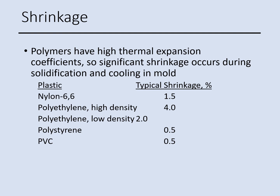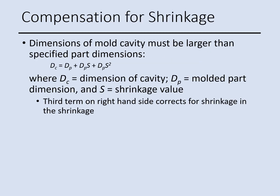Polymers, like other materials, have an expansion coefficient that affects the process during cooling because we have shrinkage, and this shrinkage must be taken into consideration. Looking at a list of materials: nylon has a typical shrinkage of 1.5%, polyethylene has more shrinkage at about 4%, while PVC has lower shrinkage at about 0.5%. Since we have shrinkage in polymers, we calculate the total amount and use it to design the mold cavity. The equation uses DC for dimension of cavity and DP for the molded part dimension.